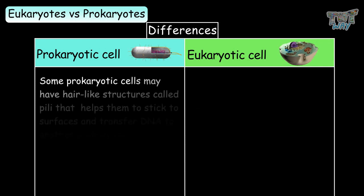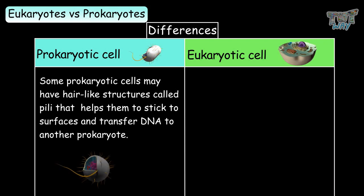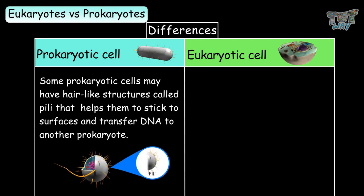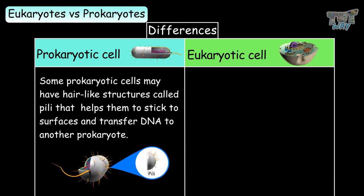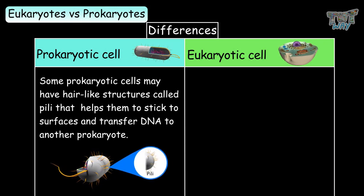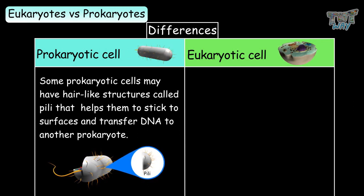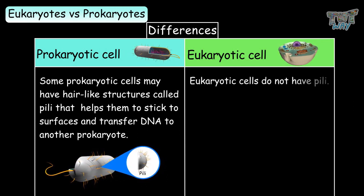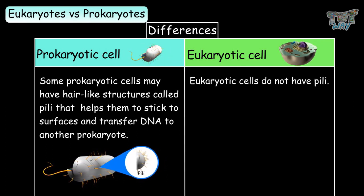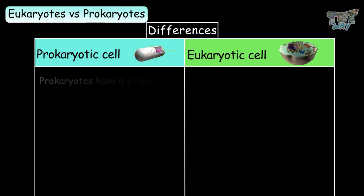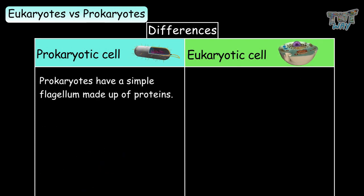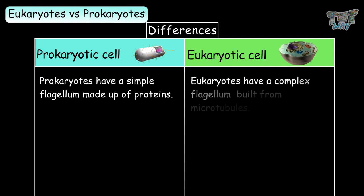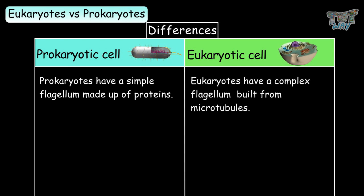Some prokaryotic cells may have hair-like structures called pili that help them stick to surfaces and transfer DNA to other prokaryotes; eukaryotic cells do not have pili. Prokaryotes have a simple flagellum made of proteins, whereas eukaryotes have a complex flagellum built from microtubules.